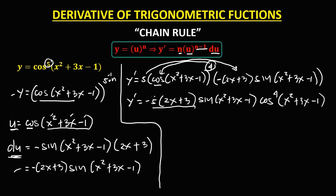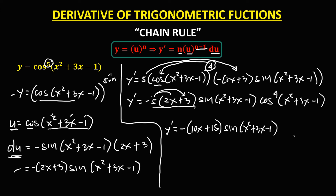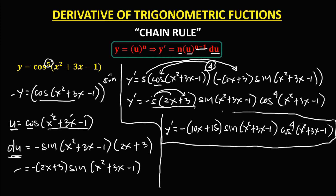Then we need to distribute the 5. So y prime equals negative (10x plus 15), times sine (x squared plus 3x minus 1), times cosine to the power 4 (x squared plus 3x minus 1). So this is now the derivative.